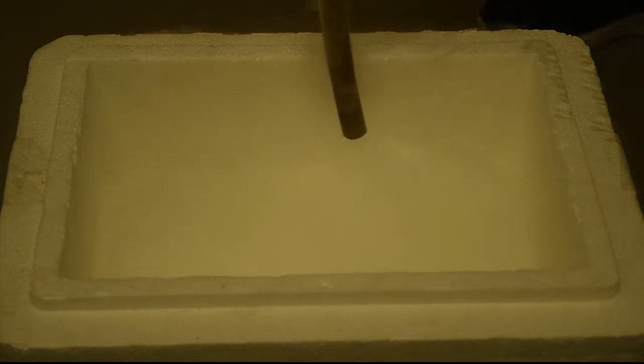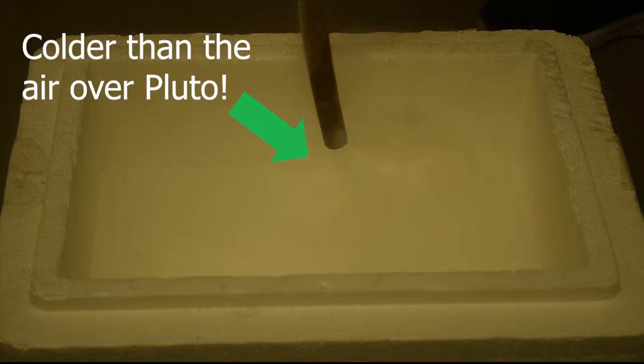In fact, liquid nitrogen is two and a half times colder than the lowest temperature ever measured on Earth. For nitrogen to be a liquid, it has to be minus 320 degrees Fahrenheit, which is even colder than the air over Pluto.